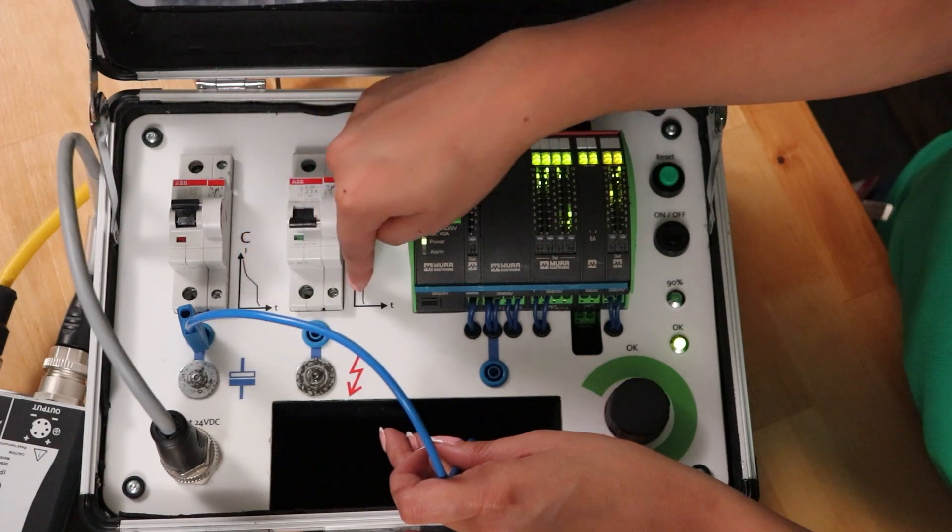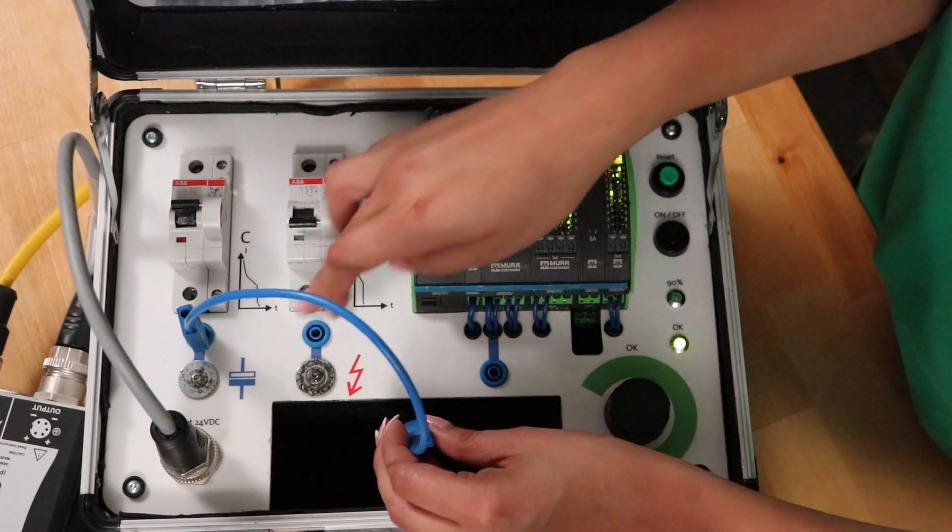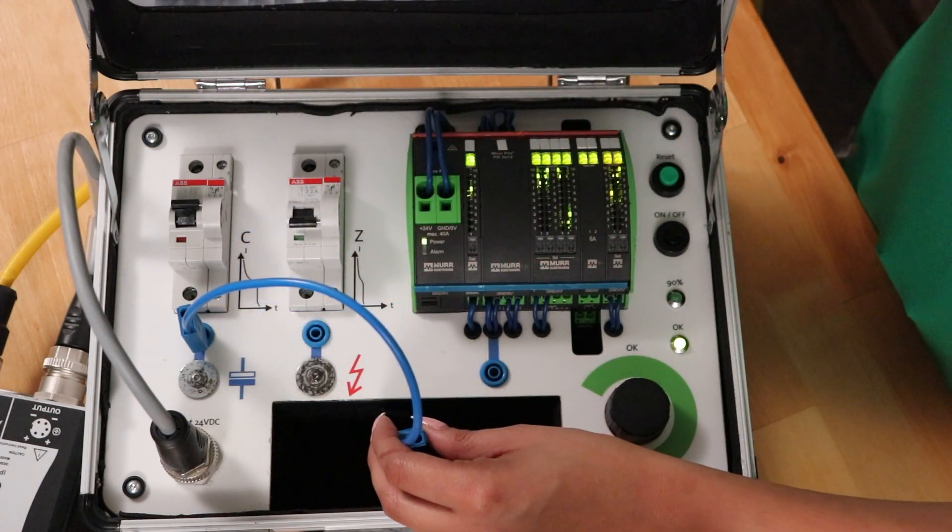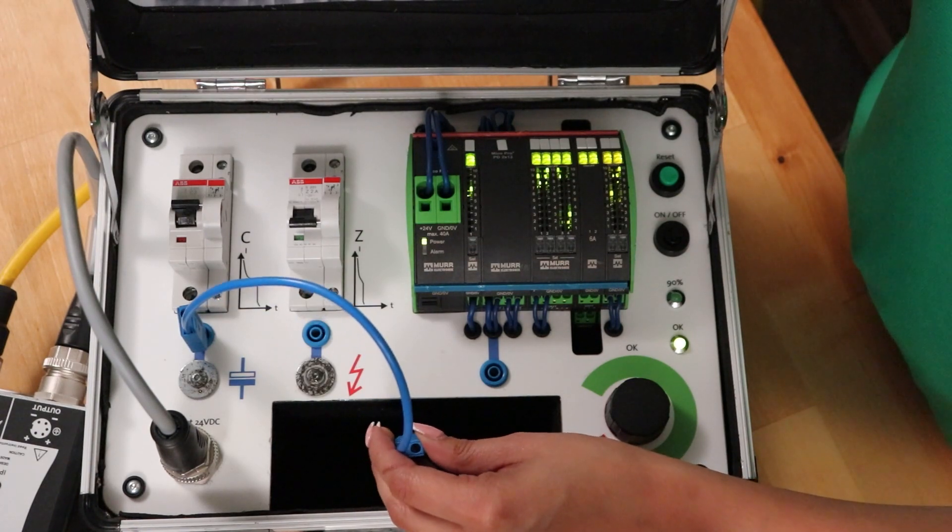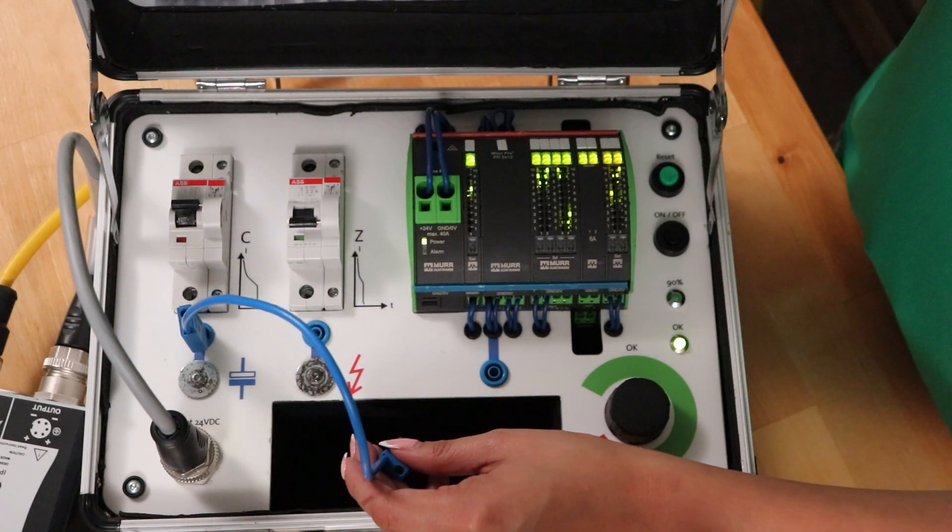As you can see this one takes longer and this one takes shorter. The C curve breaker makes sure that when there's a small spike in current, such as when you turn on your devices or your machines, it doesn't trip. So that's great because you want to make sure that it doesn't stop as soon as the machines start.